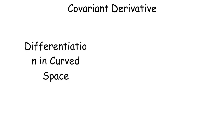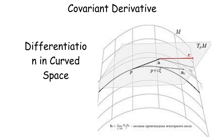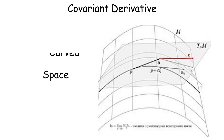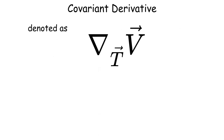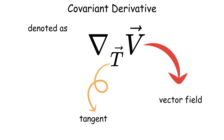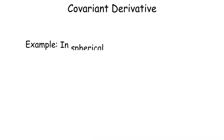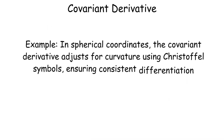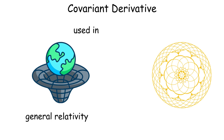The covariant derivative extends differentiation to vector fields on curved manifolds, accounting for the geometry of the space. It is denoted as the gradient sub T of V for a vector field V along a curve with tangent T. For example, in spherical coordinates, the covariant derivative adjusts for curvature using Christoffel symbols, ensuring consistent differentiation. This is crucial in general relativity and differential geometry.